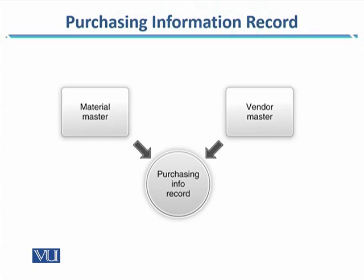In the purchasing information record, you would have all the information regarding the material master. In the material master, all the information is available in the ERP system. The term 'master' is used when the information already exists in the ERP system, which means you don't need to enter it again and again.